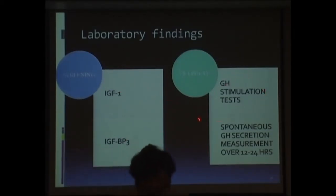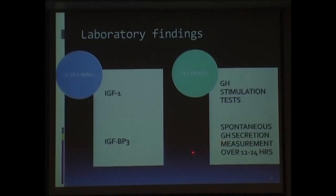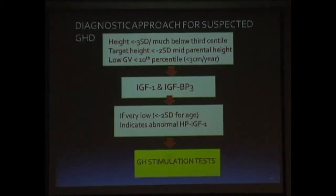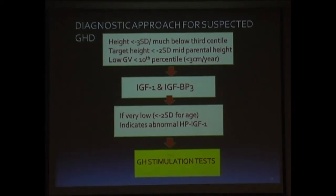The definitive test is obviously the growth hormone stimulation test. Because continuous measurement is cumbersome, some centers have recommended spontaneous measurement of growth hormone secretion over a period of 12 to 24 hours, but this is very difficult to do, no longer recommended, and not performed in many centers. What we do instead is the growth hormone stimulation test. Now, if we have a child who is short, we start with the auxological criteria — height below three standard deviations with poor growth velocity. We do a screening test in the form of IGF-1 and IGFBP-3; if both are low, we proceed to the growth hormone stimulation test.